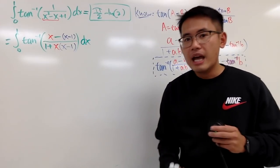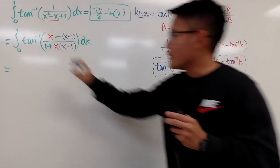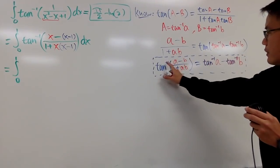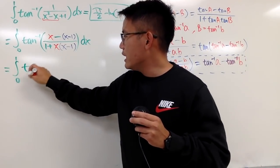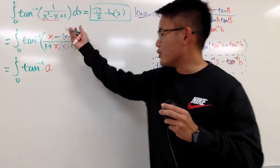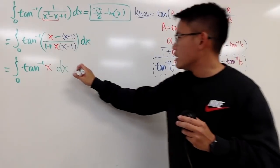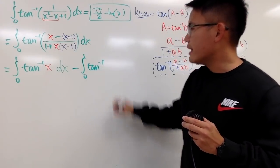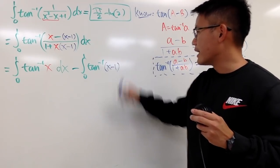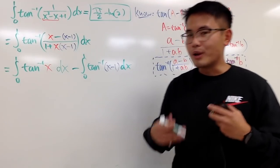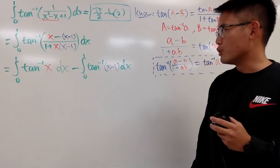We can now legitimately break this apart. The integral from 0 to 1 splits into: the integral of inverse tangent of x, minus the integral from 0 to 1 of inverse tangent of x minus 1. We are happier now because it's just inverse tangent of x, which we can integrate using integration by parts. Likewise, we can do the same for the other integral.